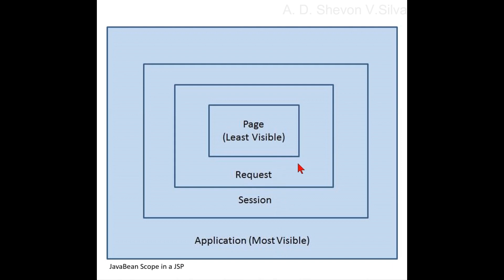Page scope: if a Bean is declared with page scope, it is equivalent to a local variable in regular Java code. The reference to the Bean disappears once the JSP page is processed. It cannot be referenced by any other JSP or servlet if forward or include is used. The reference remains alive in another servlet or JSP that is called by jsp:include or jsp:forward, or using the RequestDispatcher object.